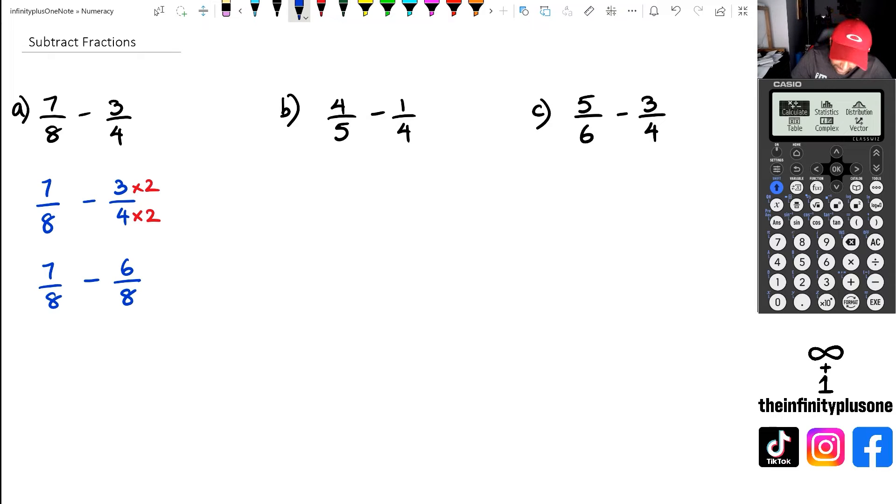Now the denominators are the same. So I'm going to write down 8 as it is, and then 7 minus 6, which happens to be 1.